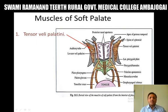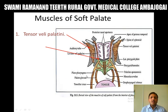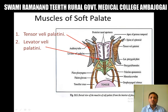The action of the tensor veli palatini muscle is to tense the soft palate and also to open the auditory tube. The levator veli palatini muscle arises from the medial side of the auditory tube and the inferior aspect of the apex of the petrous part of the temporal bone. It is a cylindrical muscle that passes downwards and medially, and is inserted into the palatine aponeurosis, intermingling with its counterpart.